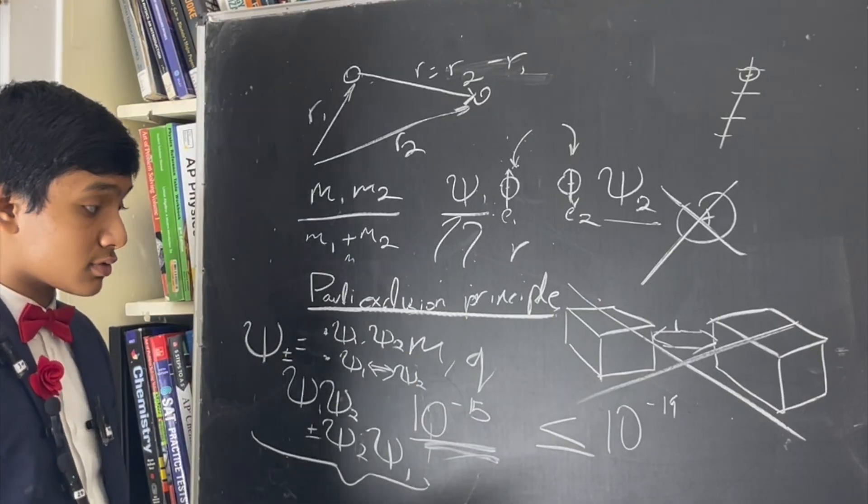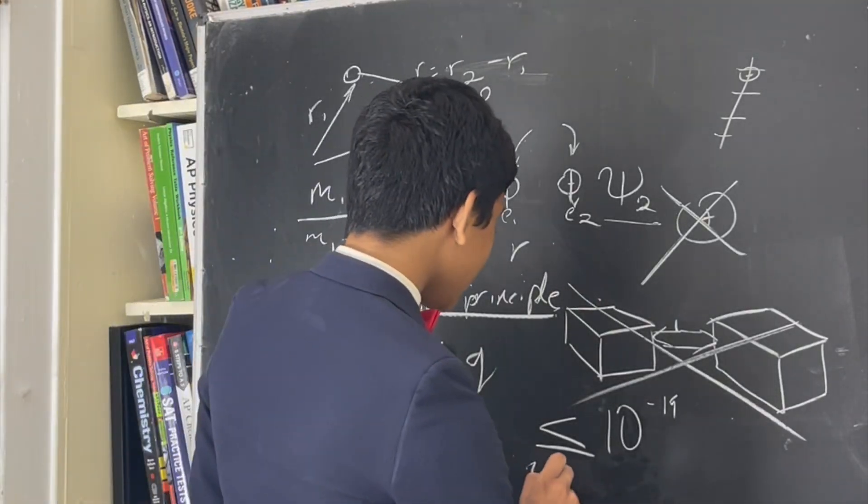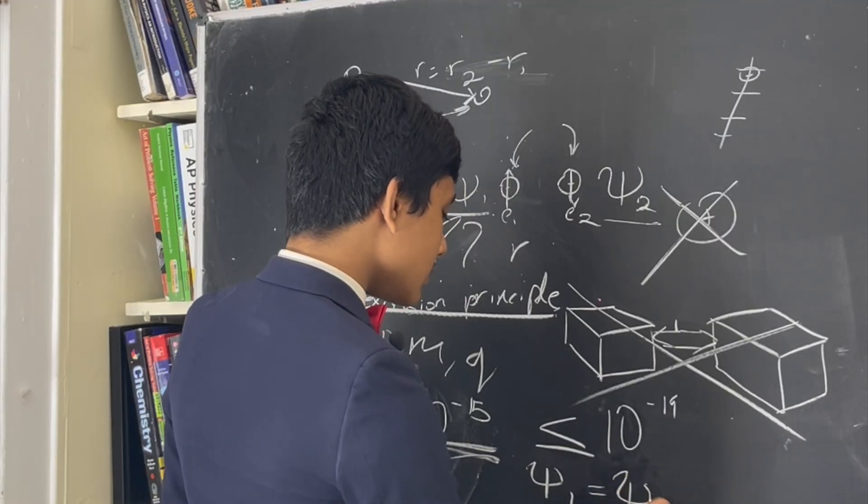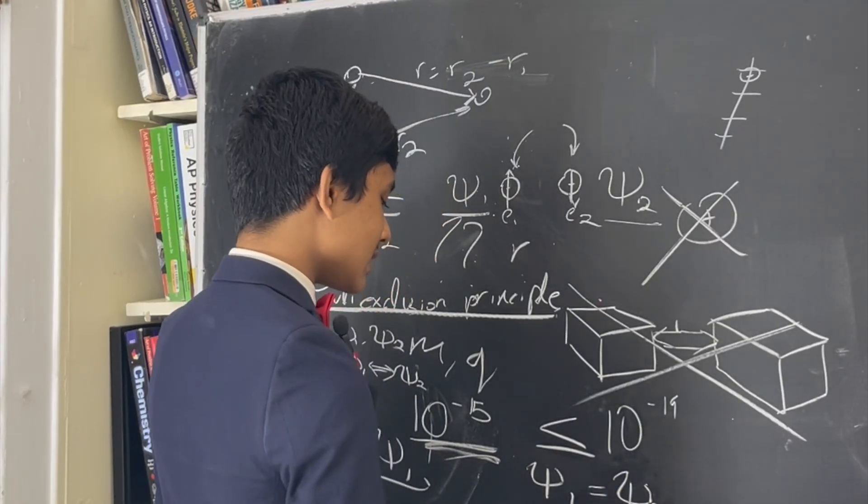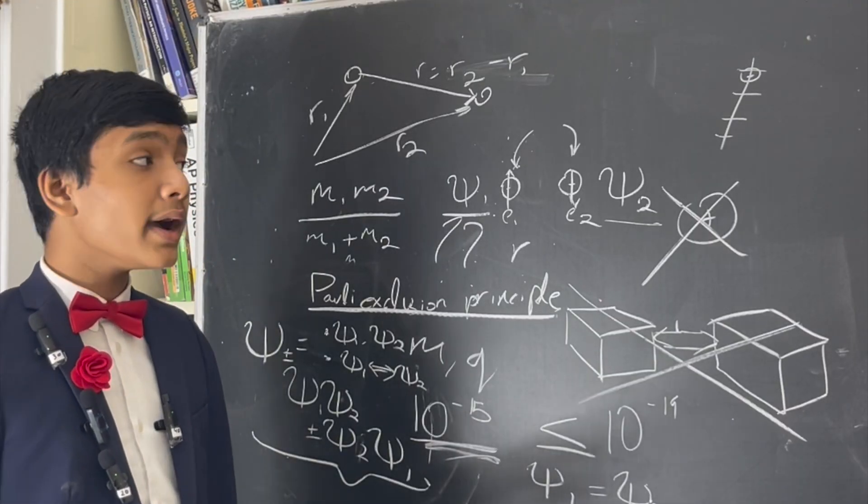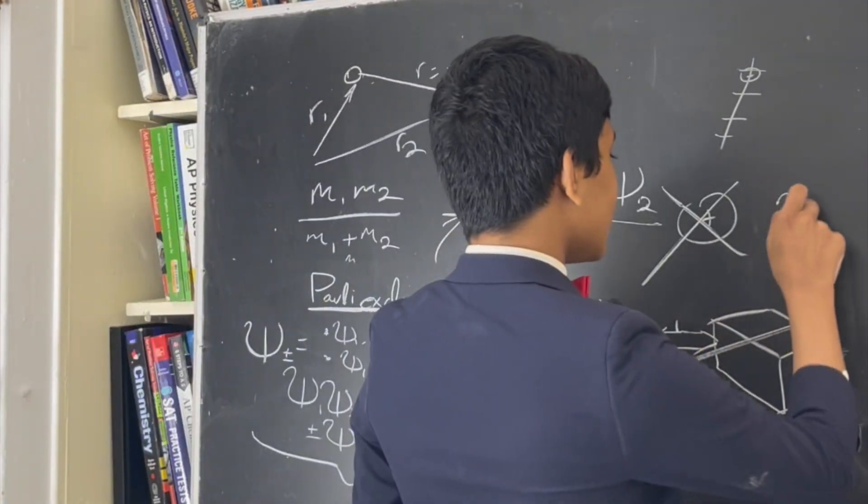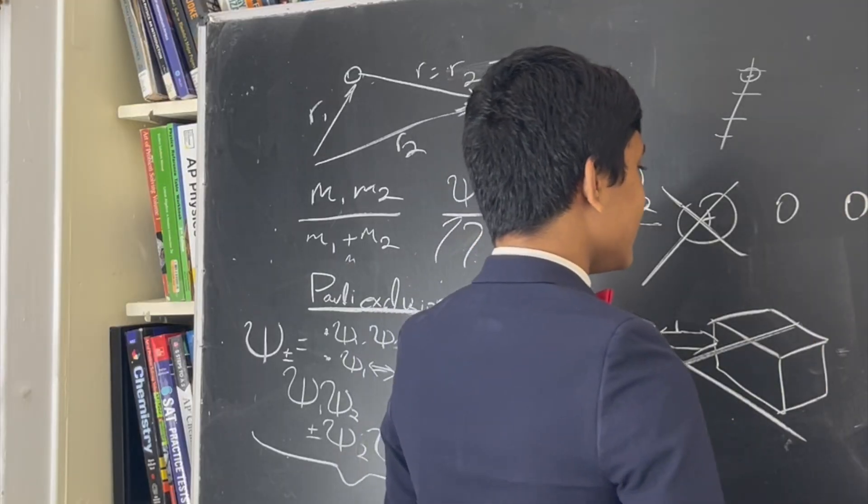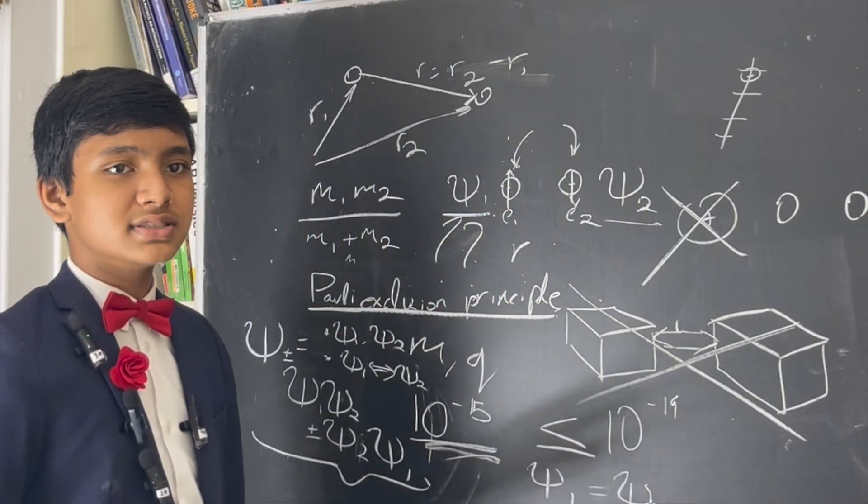Now, of course, you've probably already figured out that if psi one is equal to psi two, the wave function collapses. And so, both of them can't exist. That is exactly why two particles can't exist with the same quantum state at once.